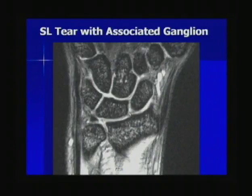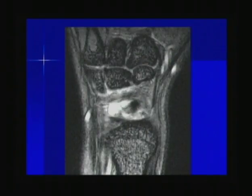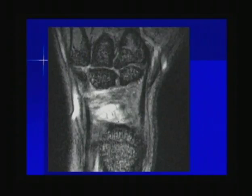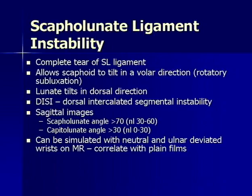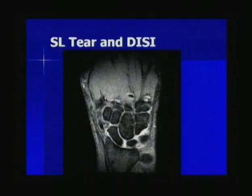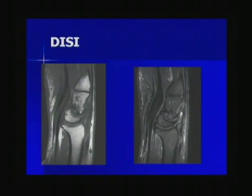Another example of a scapholunate ligament tear: along the dorsal aspect the bands of the ligament are not well visualized, and more dorsally there is an associated ganglion cyst arising from the tear — the most common location for ganglions of the wrist. Scapholunate tears can result in instability when there is a complete tear, allowing the scaphoid to tilt volarly and the lunate to tilt dorsally, resulting in a DISI formation. On sagittal images, a scapholunate angle greater than 70 degrees or capitolunate angle greater than 30 degrees is helpful, though these instability patterns can be simulated by wrist position on MRI and must be correlated with plain films. A large scapholunate tear shows widening of the scapholunate interval with a large fluid-filled gap and dorsal tilt of the lunate consistent with DISI formation.